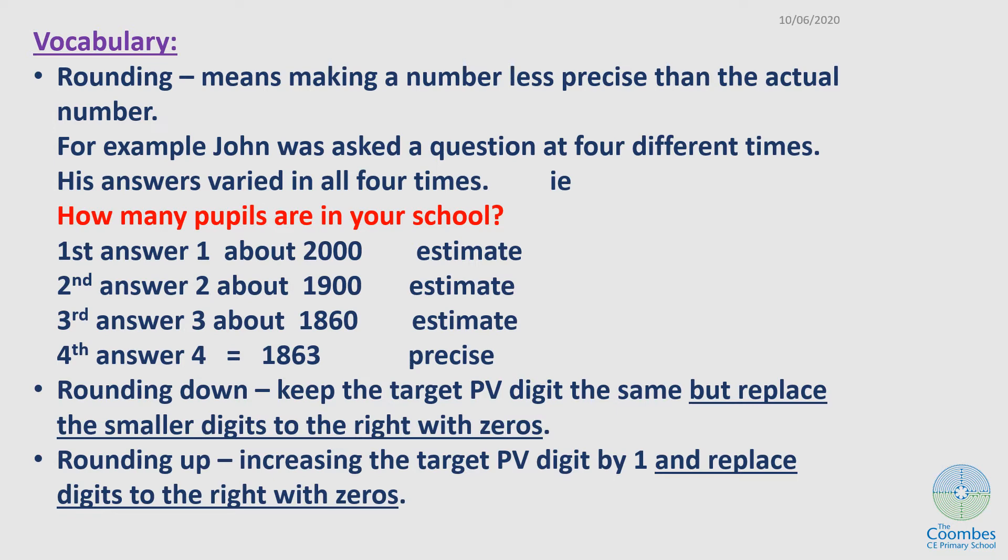His first answer was about 2,000. The second time he said about 1,900. And the third time he said about 1,860. The actual number of pupils was 1,863. That was the precise number of children. All the others were estimates.